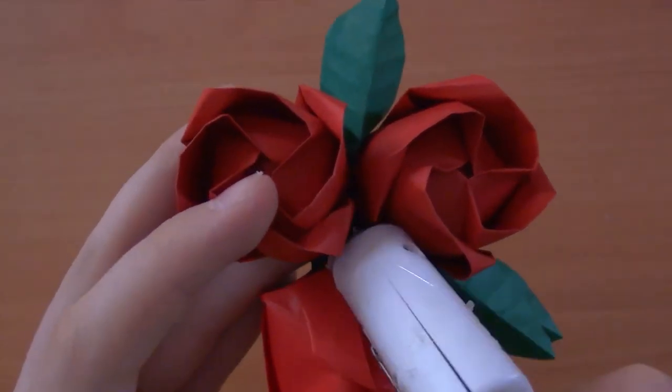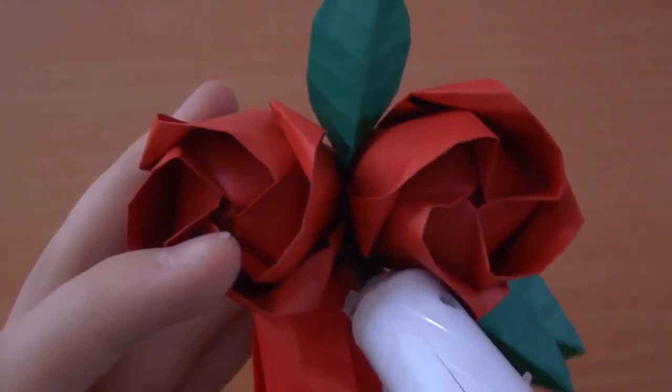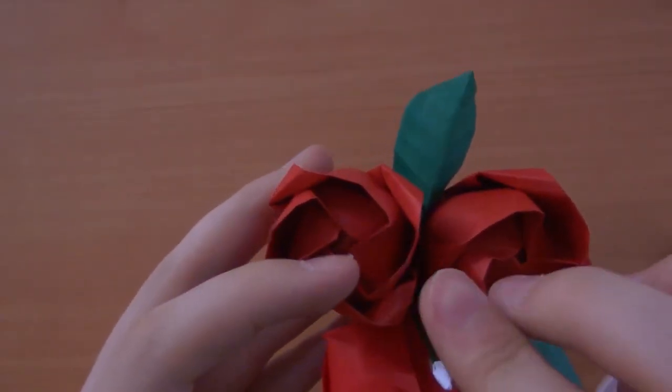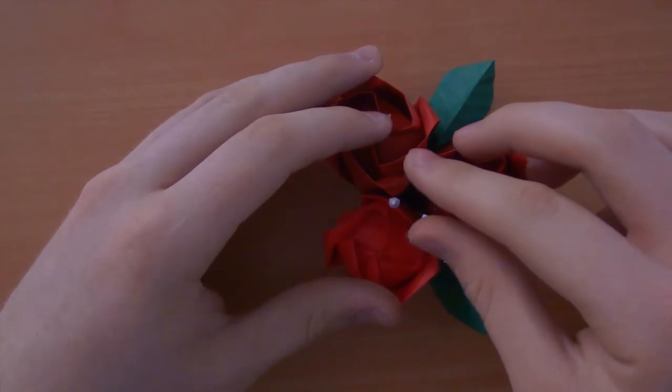You're now going to apply glue to the base of the middle of the corsage and as quickly as possible, take the baby's breath that you've just created and apply it as firmly as possible. Hold it for about 20 seconds.